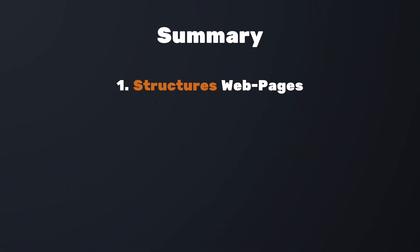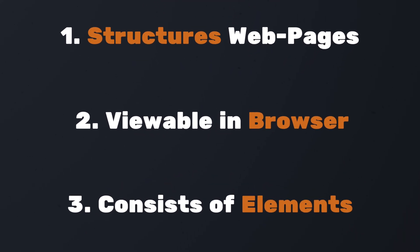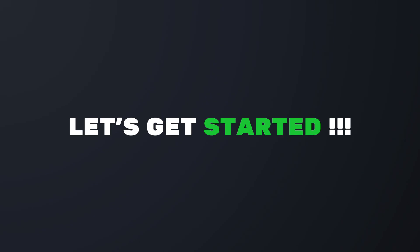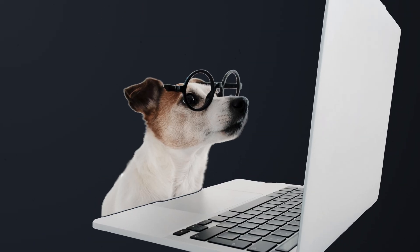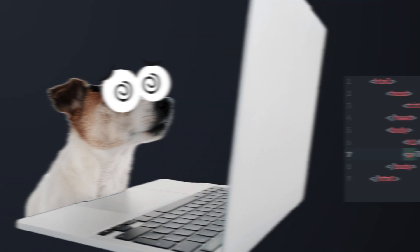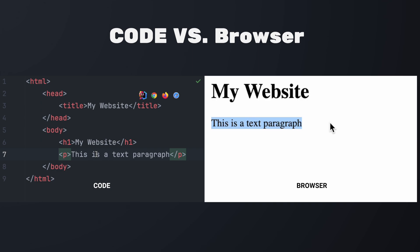To sum it up, HTML structures your web pages, is viewable in a browser, and consists of elements. Let's get started and have a look at some HTML code. Here you can see HTML code to the left, and to the right you will see how the code looks when you open it in the browser. It shows a very simple web page with only two elements: a heading and a text paragraph.